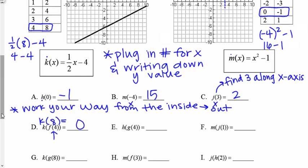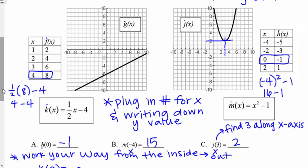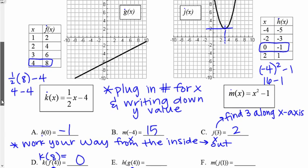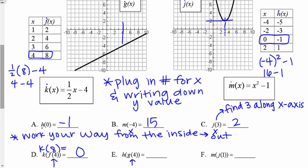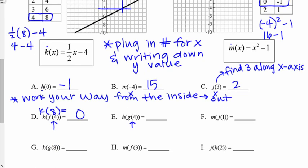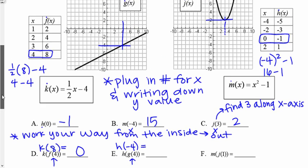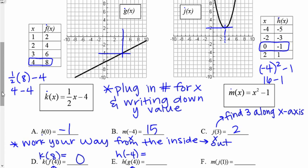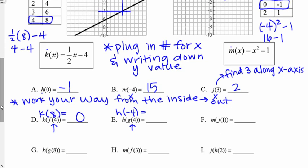For e, I'm going to do g of four. g is that first table. g of four — I'm looking for four along my x — and the y value that matches is negative four. So I got negative four for g of four. Now working to the outside, I'm doing h of negative four. h is that table over there. h of negative four is negative five. So negative five is my answer.